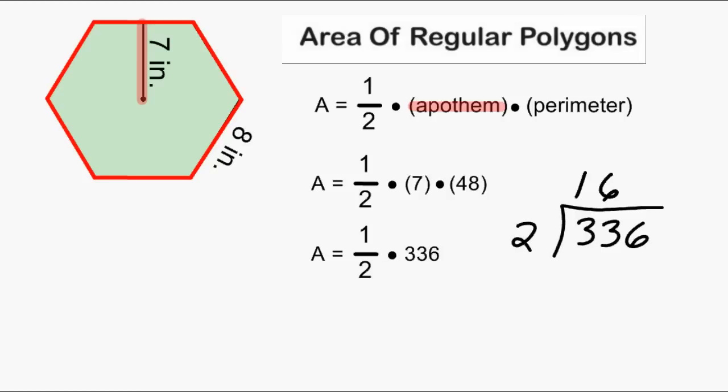We can fit 2 groups of 16 into 33, which would give us 32. The difference of 33 and 32 is 1. Now we have to bring down our next place value and that is a 6. And we can fit exactly 8 groups of 2 into 16. Now we know that the area of our regular hexagon is equal to 168 square inches.